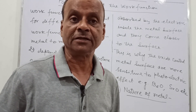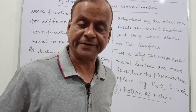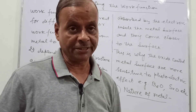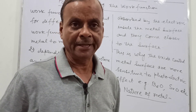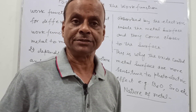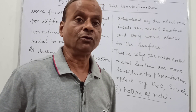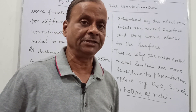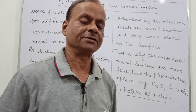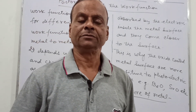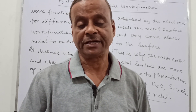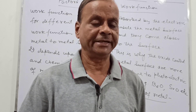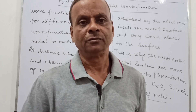So these are the three factors which affect the work function. As the work function is affected, there is an effect on threshold frequency also. If the work function decreases, the threshold frequency will decrease, and when the work function increases, the threshold frequency increases. This is the role of the work function in the emission of photoelectrons. The work function is also related to thermionic emission, but that is outside the syllabus — only the photoelectric effect is relevant here. So these are the factors that affect the work function. Thank you very much.